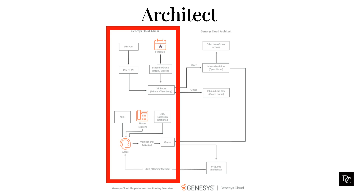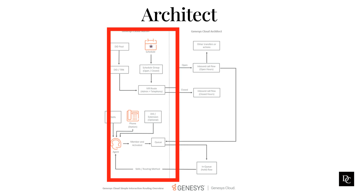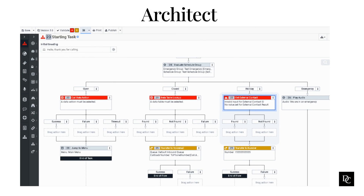In this module, we will take a look at how your tasks as an administrator coincide with what an architect does in the call flows. This is meant to give you an understanding of what you do and how it can affect the call flow builds. To get started, open up Architect, find the test flow you want to use, and open it. Click Edit. The three toolbox items we are going to review are Call Data Action, Data Table Lookup, and Get External Contact.